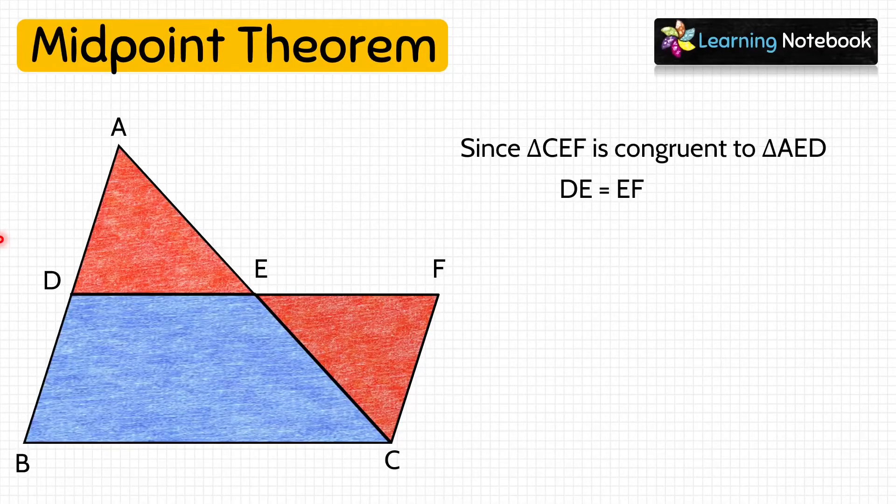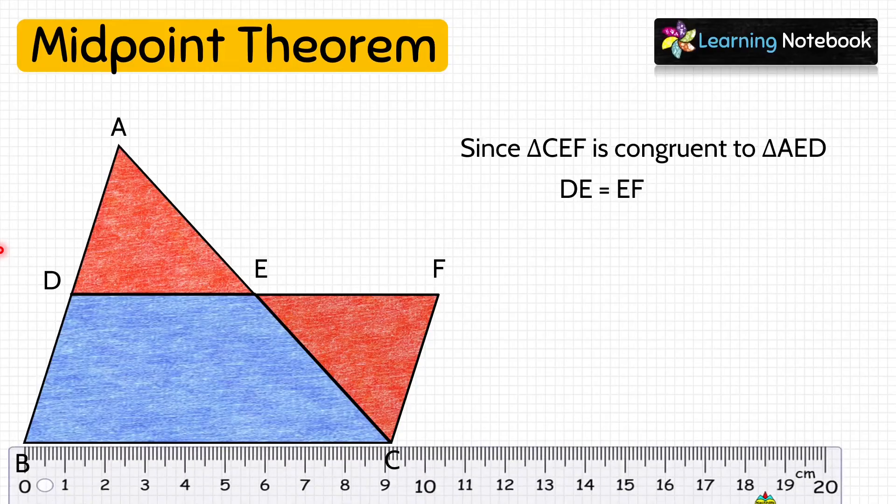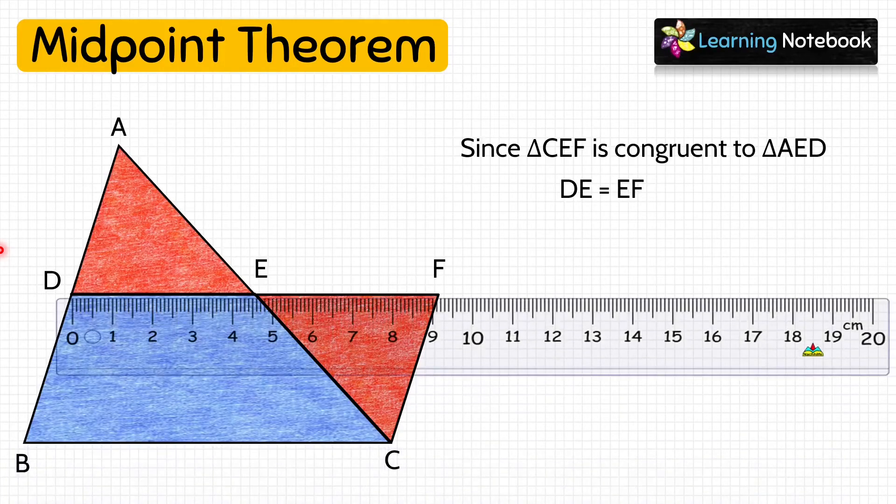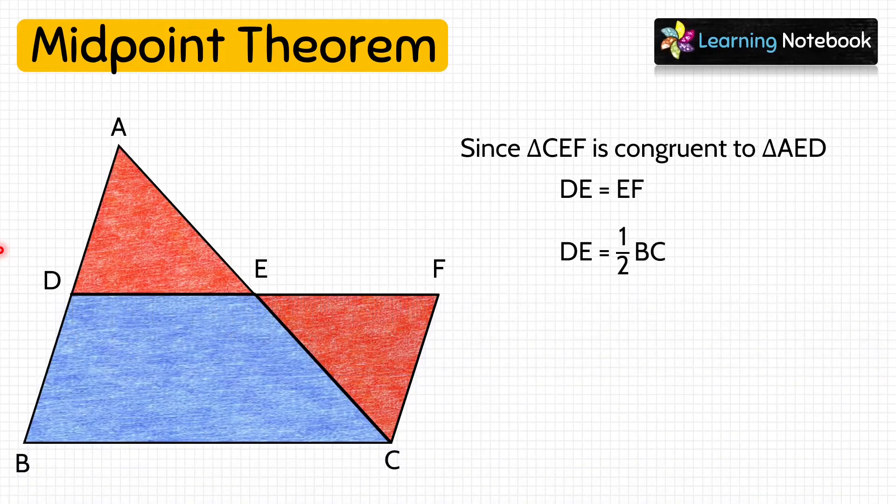Let's first measure BC which is nine centimeter. Next measure DE which is 4.5 centimeter. Therefore DE is half of BC. Now let's mark these as 1 and 2.